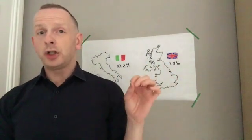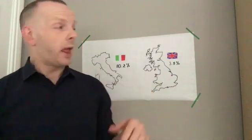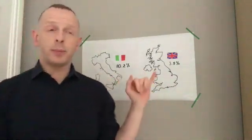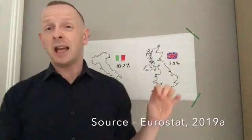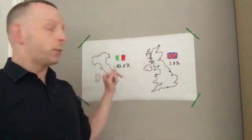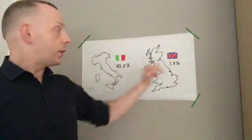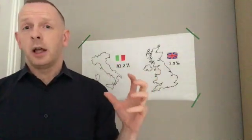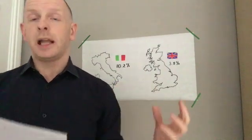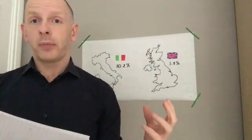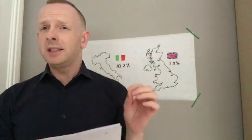If you compare that to another EU country — in this case Italy, as of April 2019 from the Eurostat website — they have an unemployment rate of 10.2%. You can see quite a big difference: Italy has a much looser labour market and the UK has a much tighter labour market.